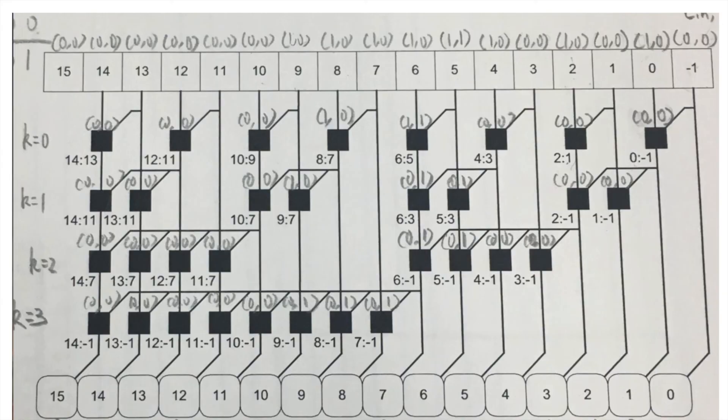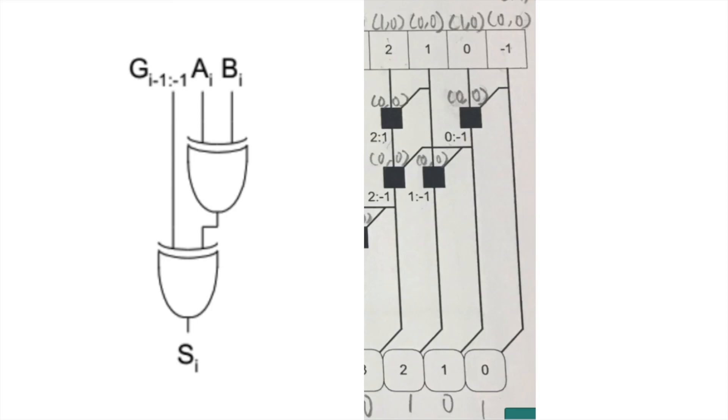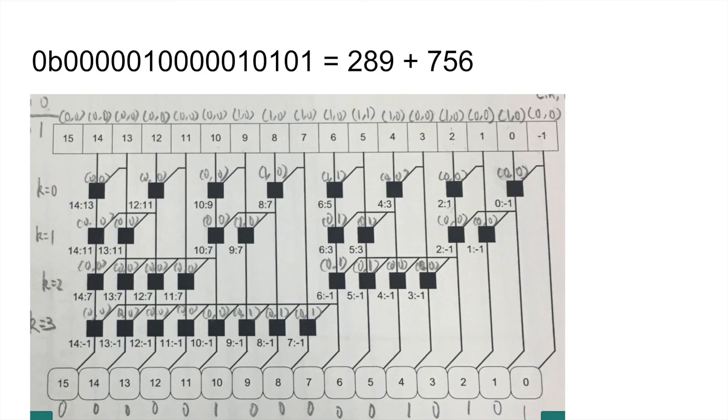And then you will calculate the s, s which are your ideal result of 289 plus 156. So the s is calculated with the g i minus 1 negative 1 xor with the result of ai bi xor. And in this case, you will generate the result that we wanted, which is 289 plus 756 equals to the binary is 1 1 0 1 1 0 1 0 1. And that's about it.